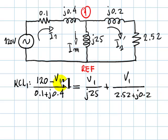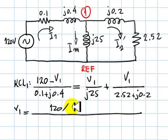From there, I solve for V1. The right-hand side term will be just 120 divided by that impedance.